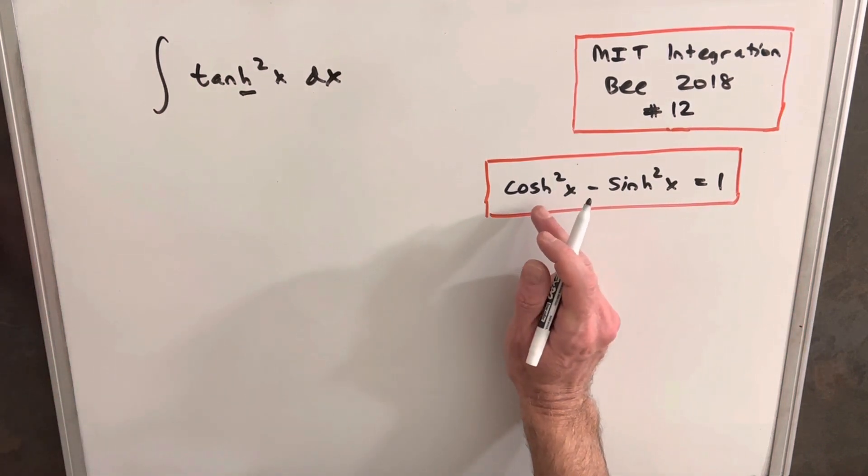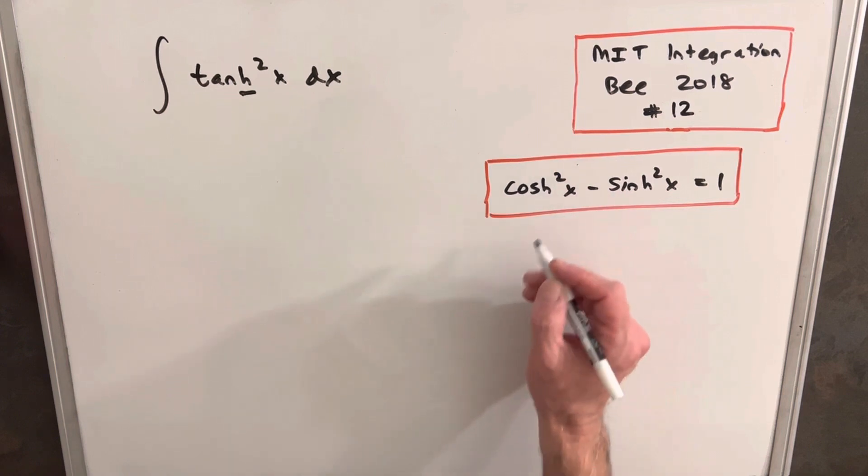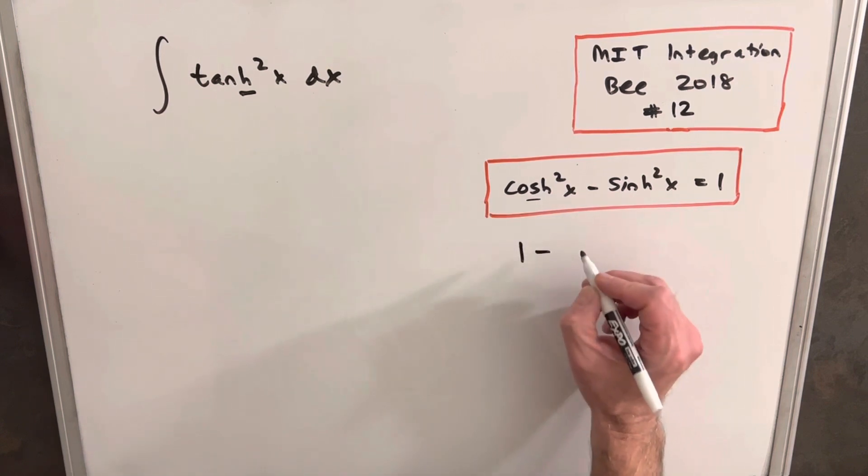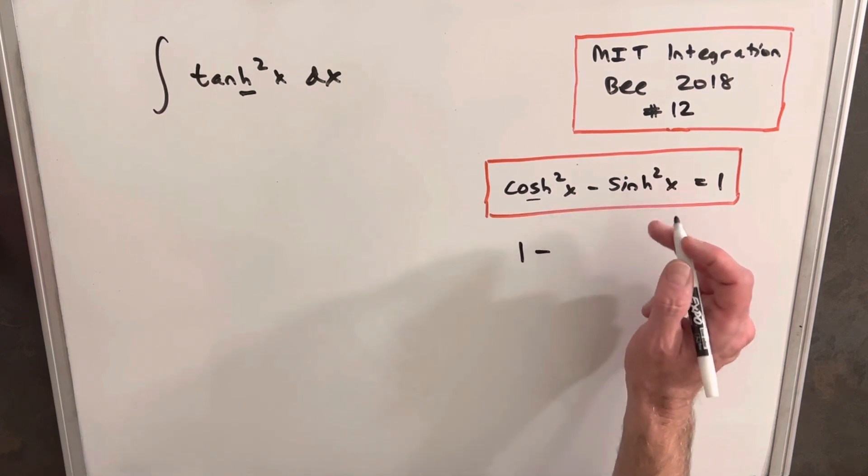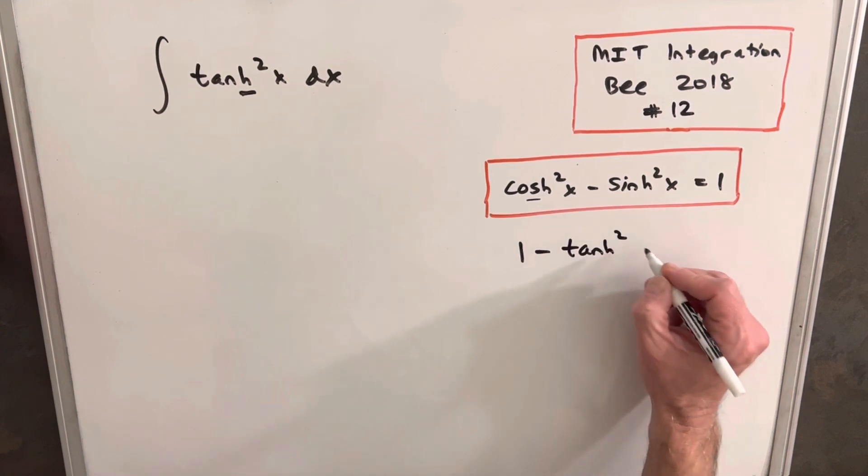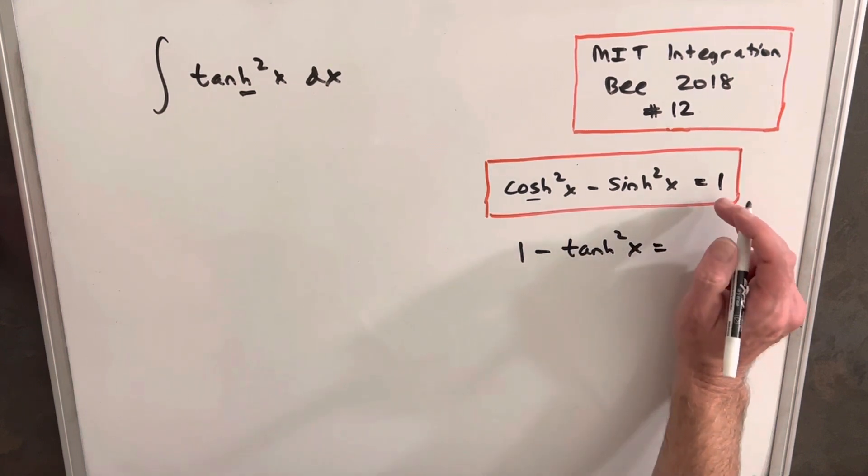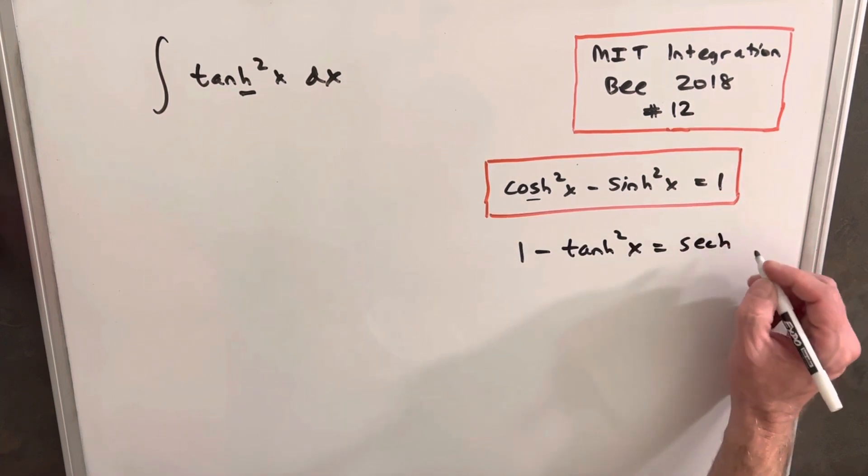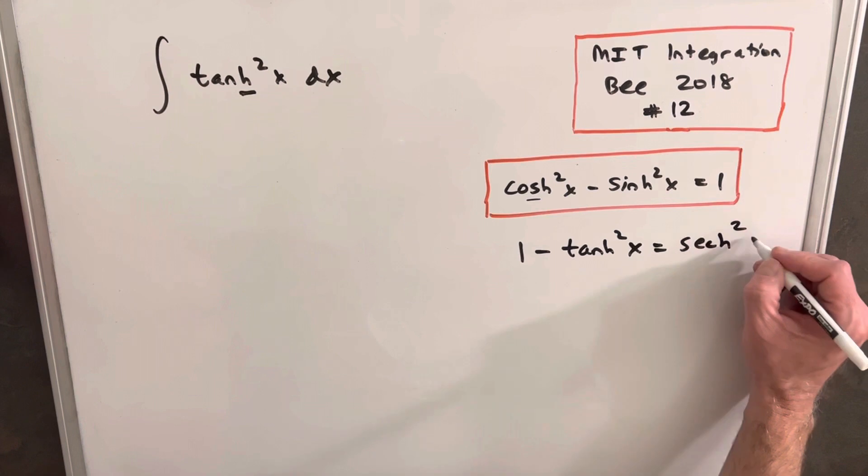And then if we just divide through by cosh squared on this, we can get what we need. So if we divide by cosh squared here, we're going to have 1 minus sinh over cosh, which is tanh squared x. And then divided by cosh here, we're going to have hyperbolic secant squared x.